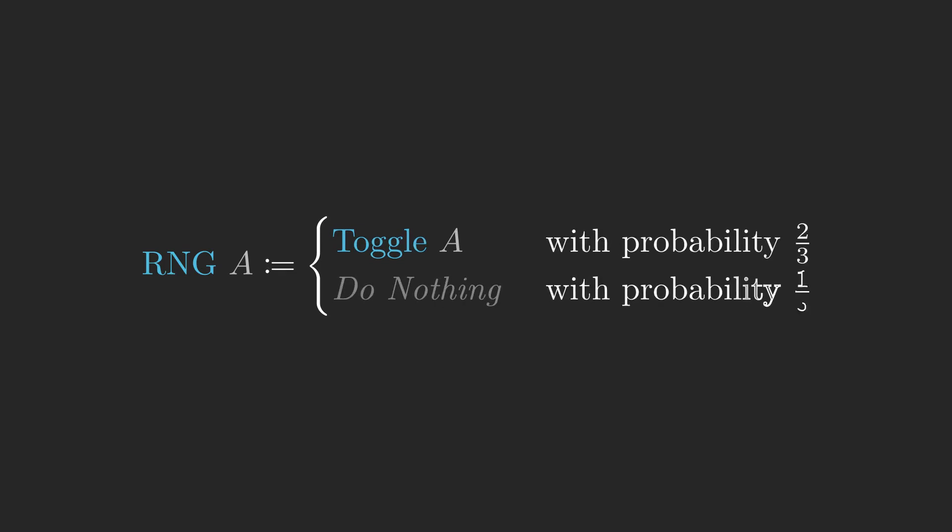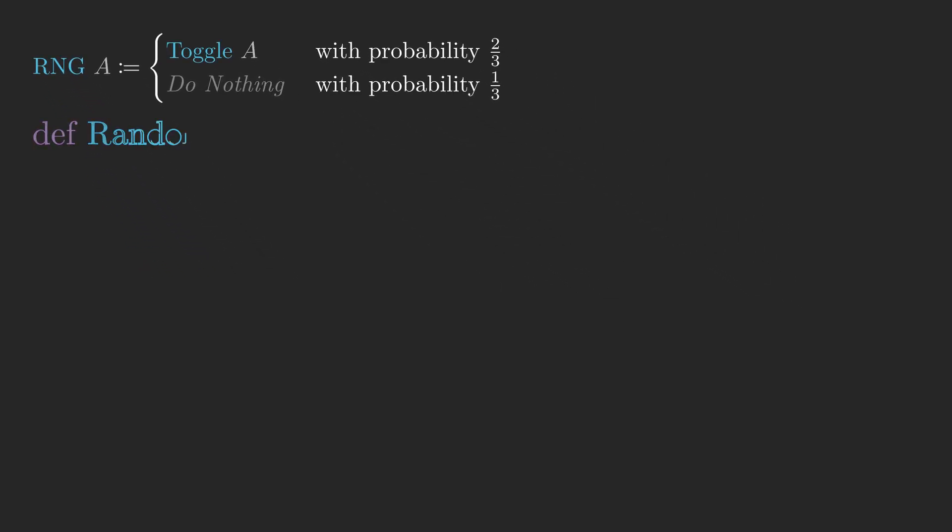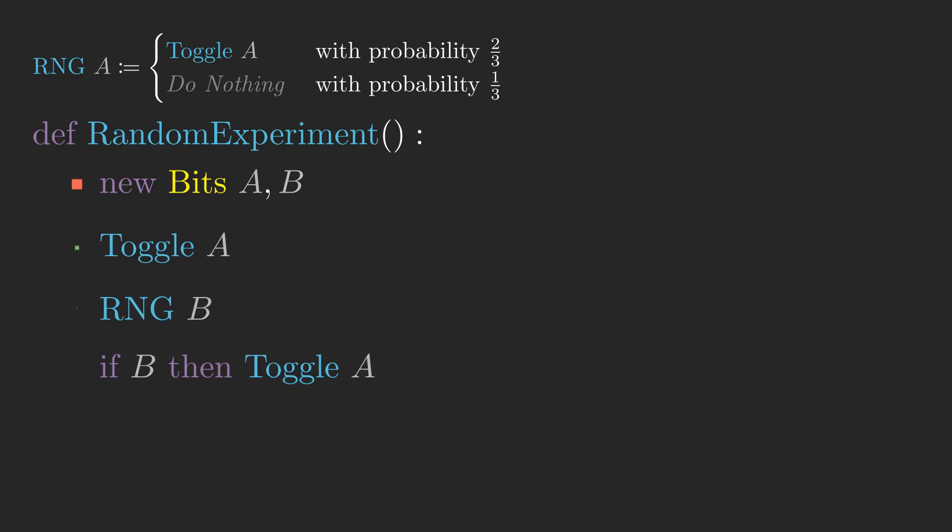For example, I'll define a one-bit probabilistic instruction called RNG. RNG A will toggle bit A with probability two-thirds and do nothing with probability one-third. Let's use this new instruction in an example. We can analyze the following code with a probability tree.